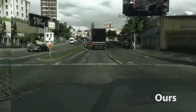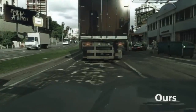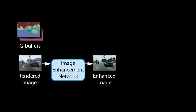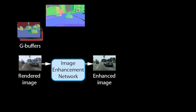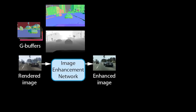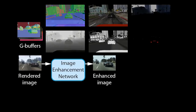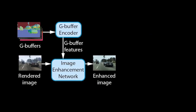Let us now look at our method in detail to understand why it is more stable and produces fewer artifacts. Our method takes a rendered image from the game and passes it through an image enhancement network to produce an enhanced image. We further extract a set of rendering buffers, called G-buffers, produced by the game engine. G-buffers contain geometric information such as surface normals or distance to the camera, material information such as albedo or glossiness, and may also contain information about the lighting in a scene. We pass the buffers through a G-buffer encoder network to produce feature tensors at multiple scales. The tensors encode the information about the rendered scene.